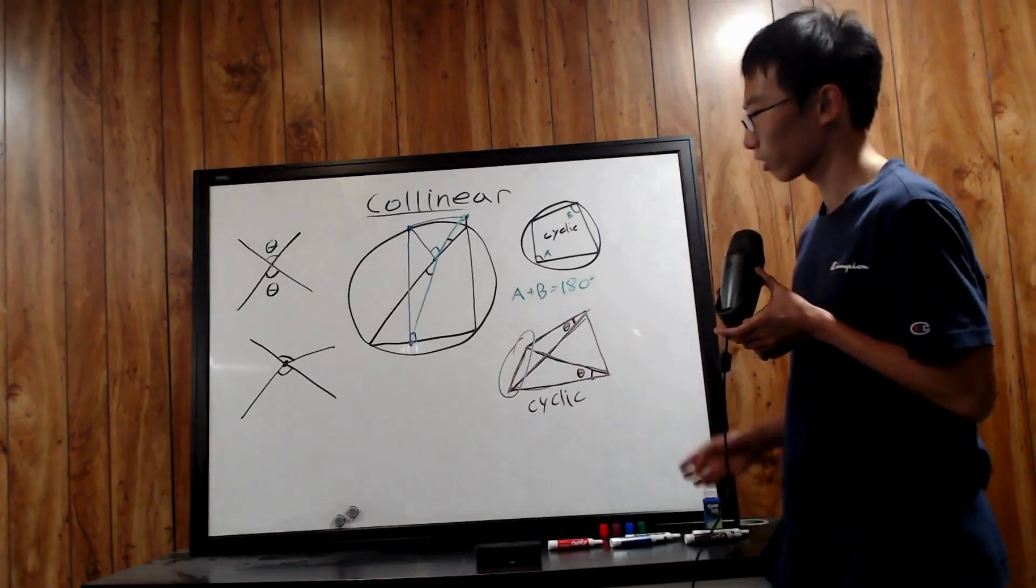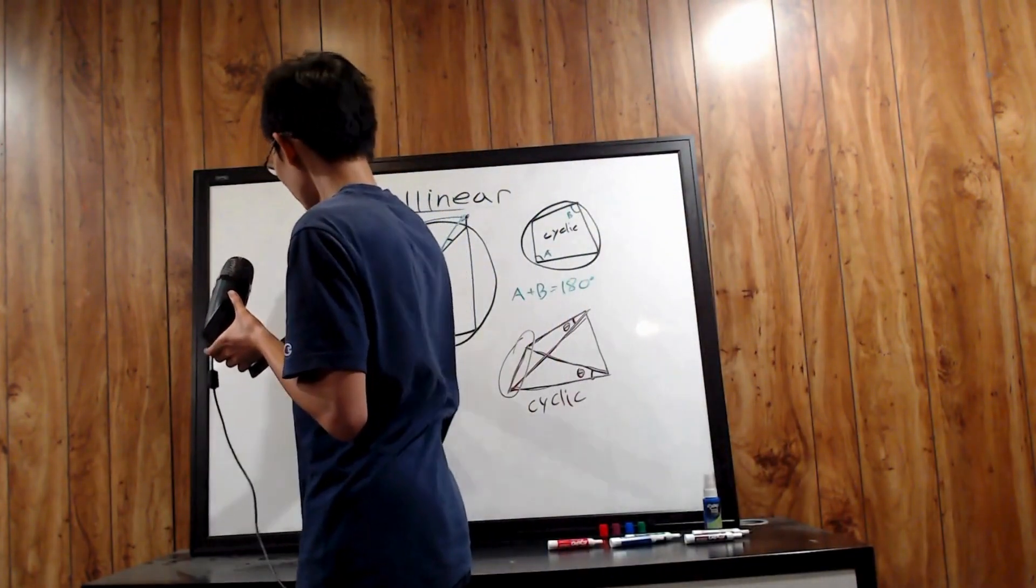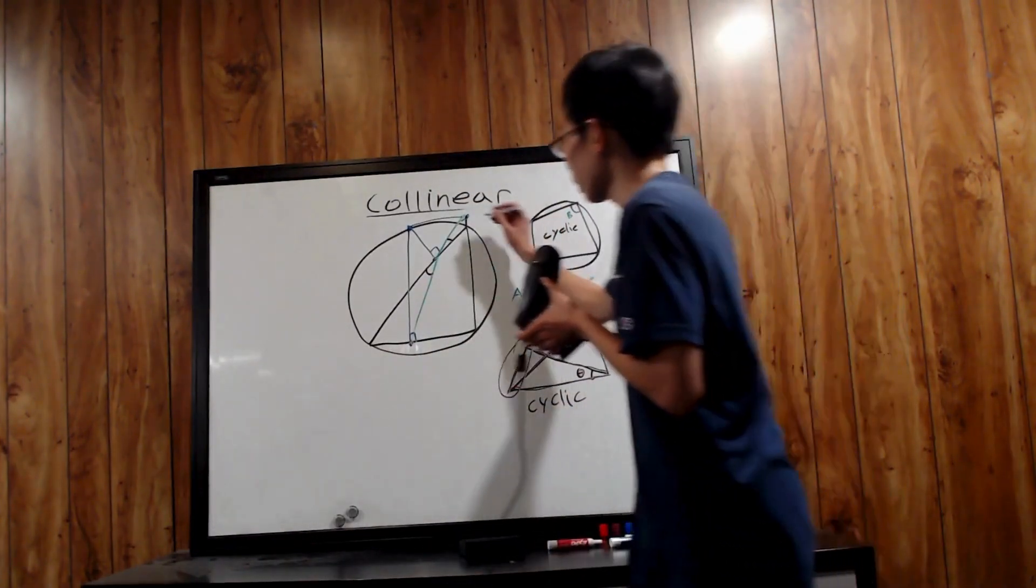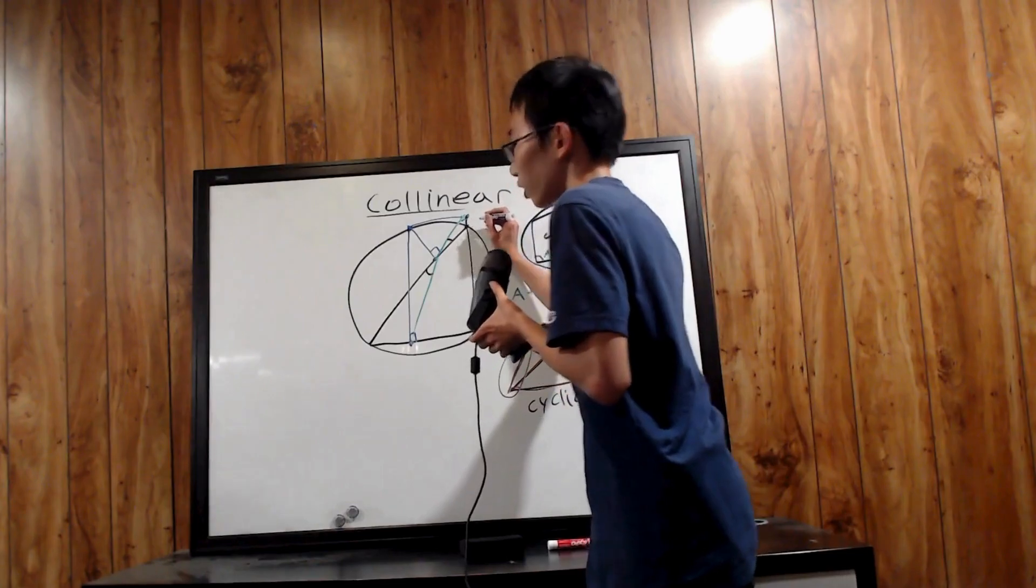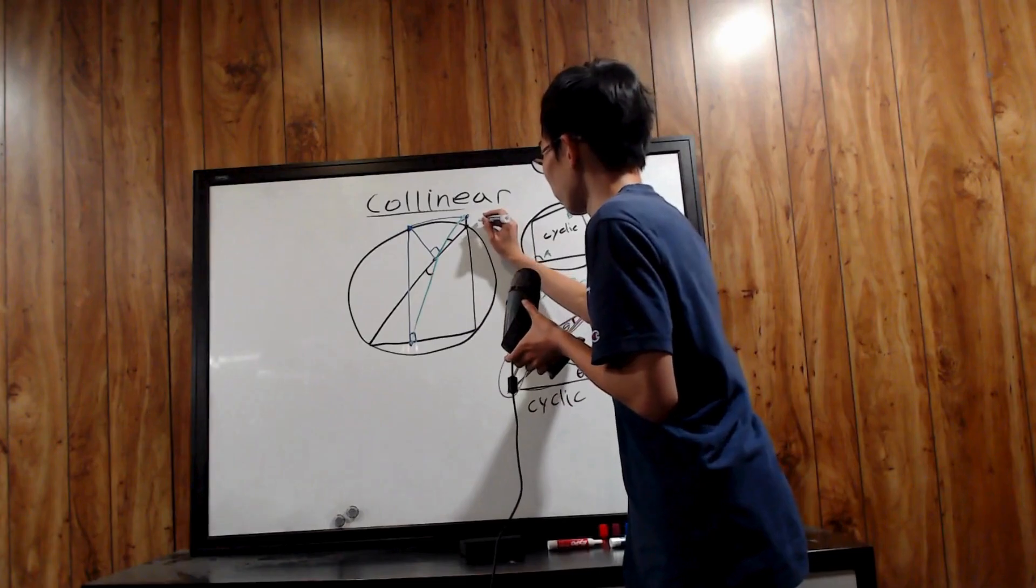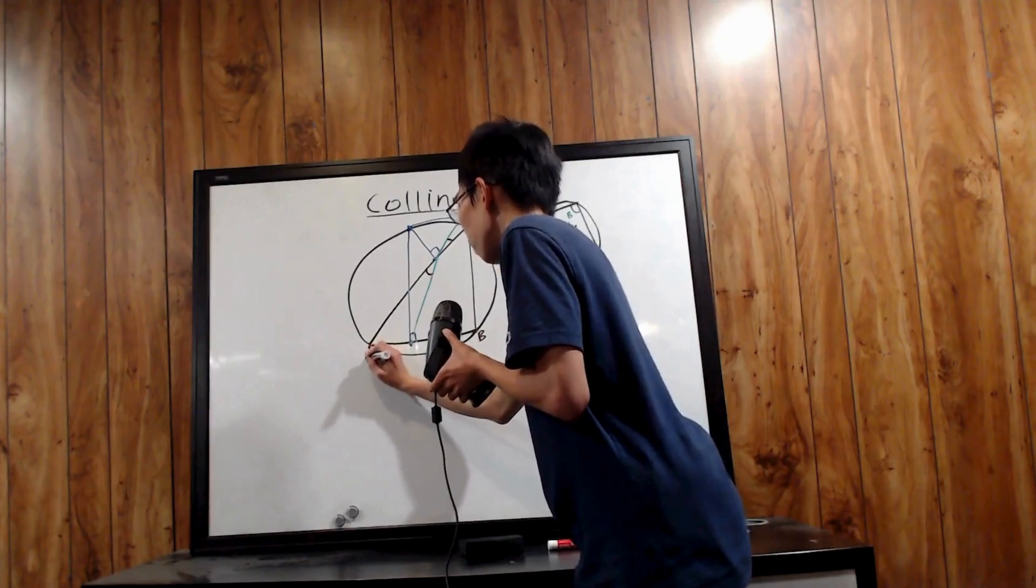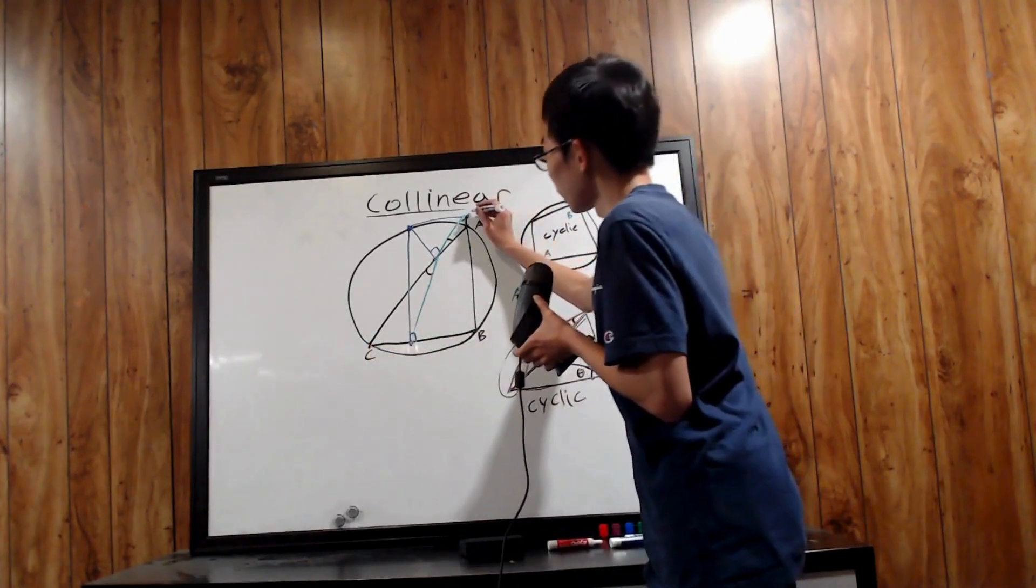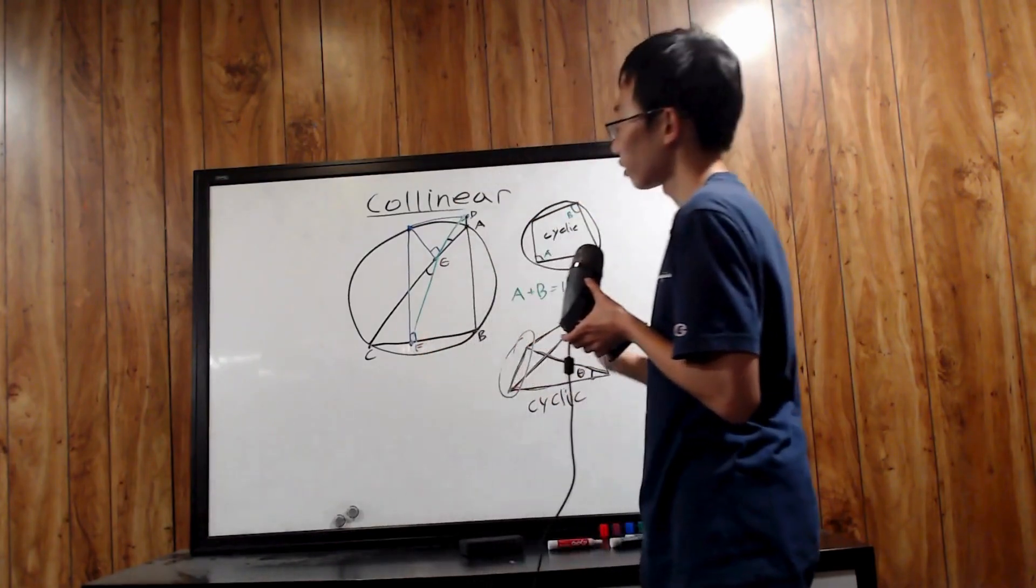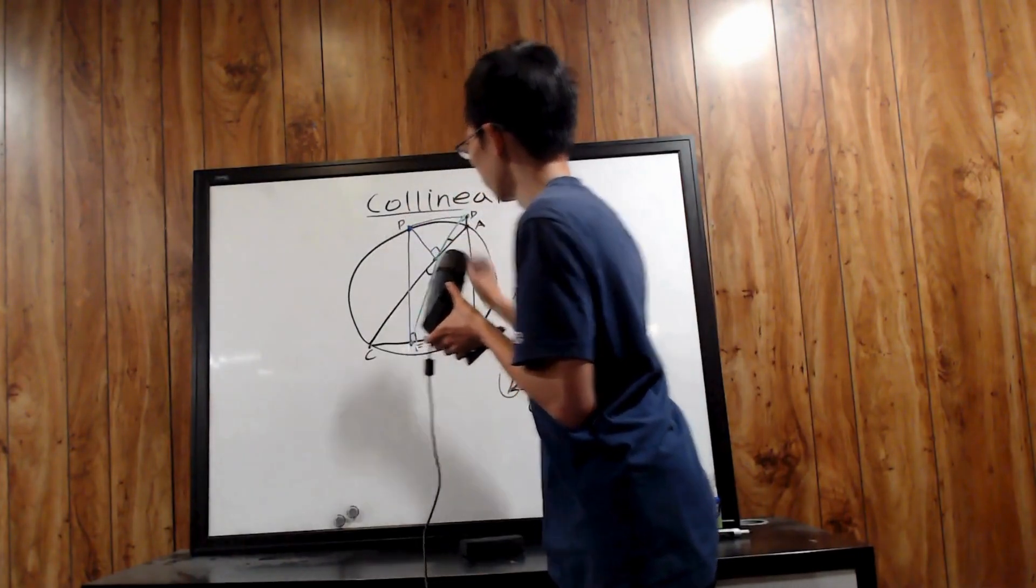So now that we have gotten these properties out of the way, we can begin our solution to this problem. First off, let's label a few points because it's going to be hard to follow the solution without naming the point. Call the vertices of the triangle A, B, and C. We're going to call the feet D, E, F. And we're going to call this point on the circumcircle point P.